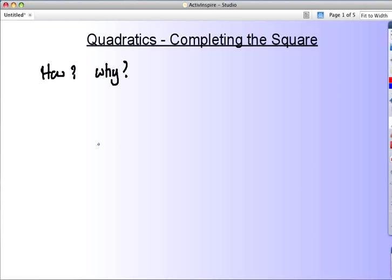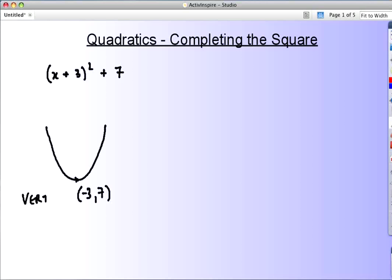The why we do it is something about what we can instantly see when we have a completed square quadratic. Let me give you something like this. We would often look at this and straight away what I could tell you is that the vertex is at minus 3, 7. That's often the reason we might do it - minimum values, vertices.